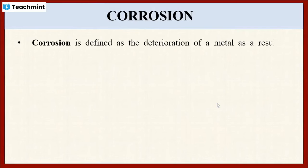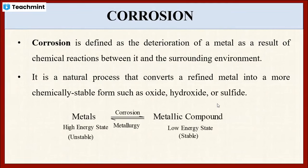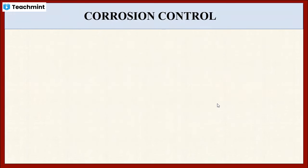Corrosion is nothing but the destruction or deterioration of a metal as a result of a chemical reaction between the metal and its surrounding environment. These metals can easily undergo corrosion, especially in an acidic medium. This corrosion causes huge economical loss as well as huge environmental pollution.